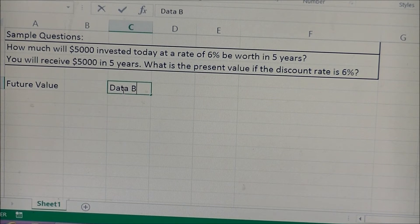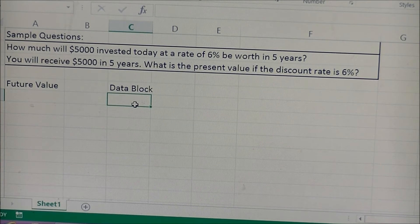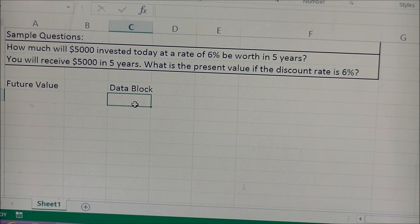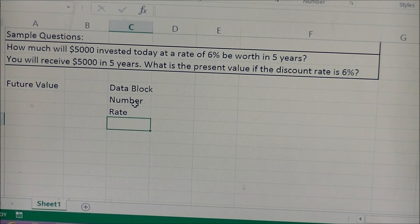In the data block, we are going to take all the information from the questions and plug them into the proper input sections. So when you're doing your data block, the first line underneath of it is going to be your number, which is your number of years. The next is going to be your rate, which is your interest rate, and that is going to be a payment.